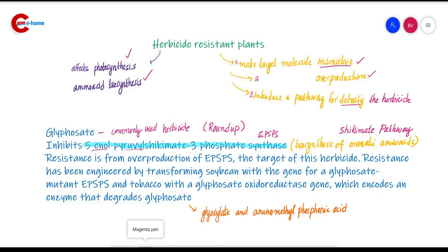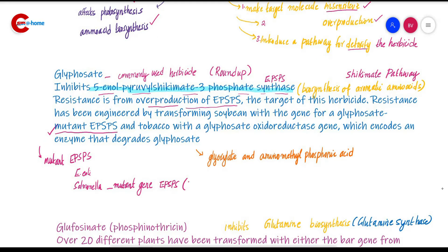To develop herbicide resistant plants against glyphosate, the first strategy is overexpression of EPSPS. The other is using a mutant variety. It was found that mutants of Salmonella typhi, medium strains, and E. coli showed tolerance to glyphosate because they contain a mutant variety of the EPSPS enzyme. We can isolate that gene from bacteria and introduce it into the plant under the control of a light-regulated promoter from the small subunit of ribulose bisphosphate carboxylase.